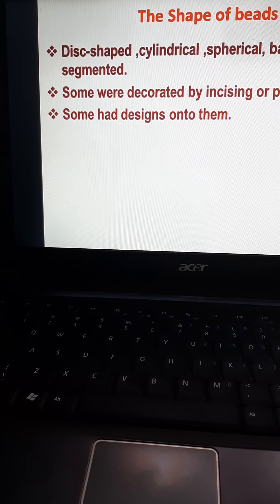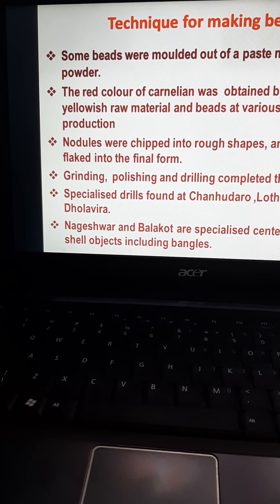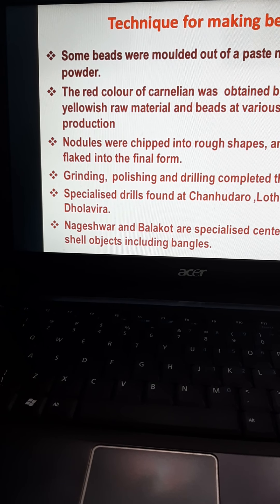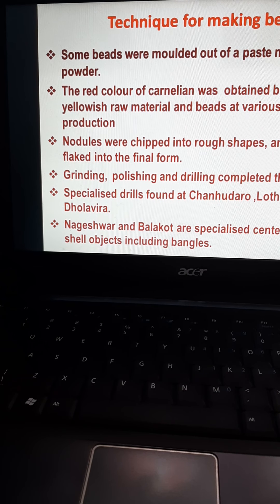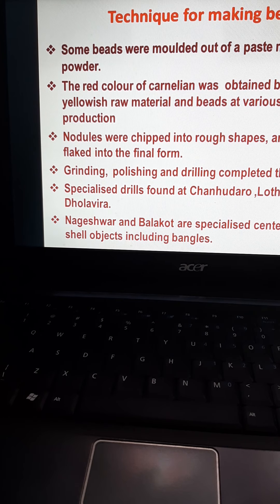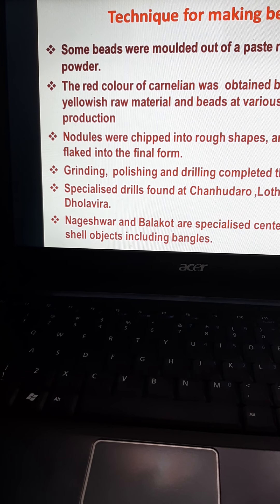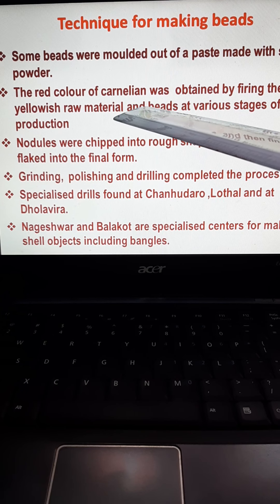The technique used for making beads was dependent upon the material. If the material was soft, the technique was based on that; if the material was hard, a different technique was used. For example, steatite, which is a very soft stone, can be crushed easily into powder. Some beads were molded out of steatite paste — they used to make a paste from steatite powder and give it a fine shape.